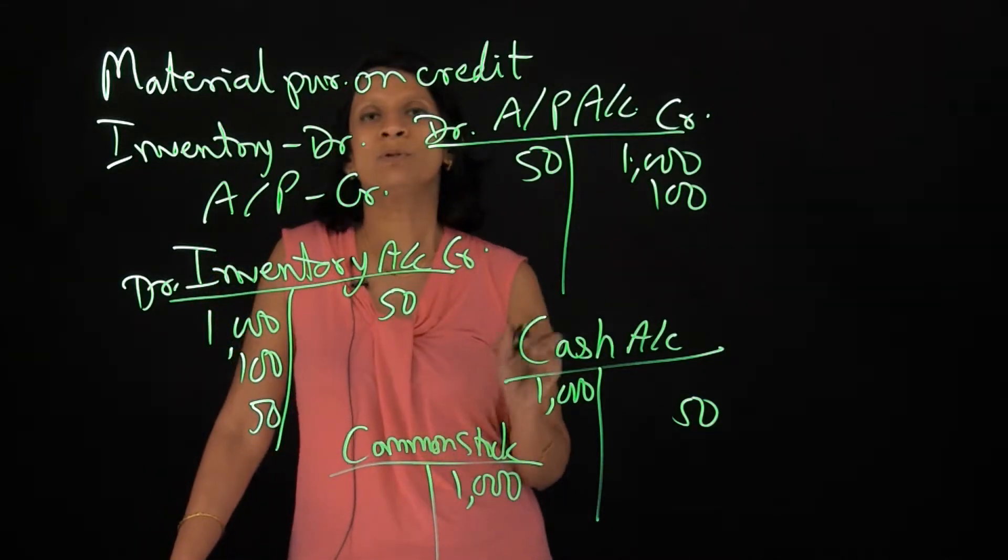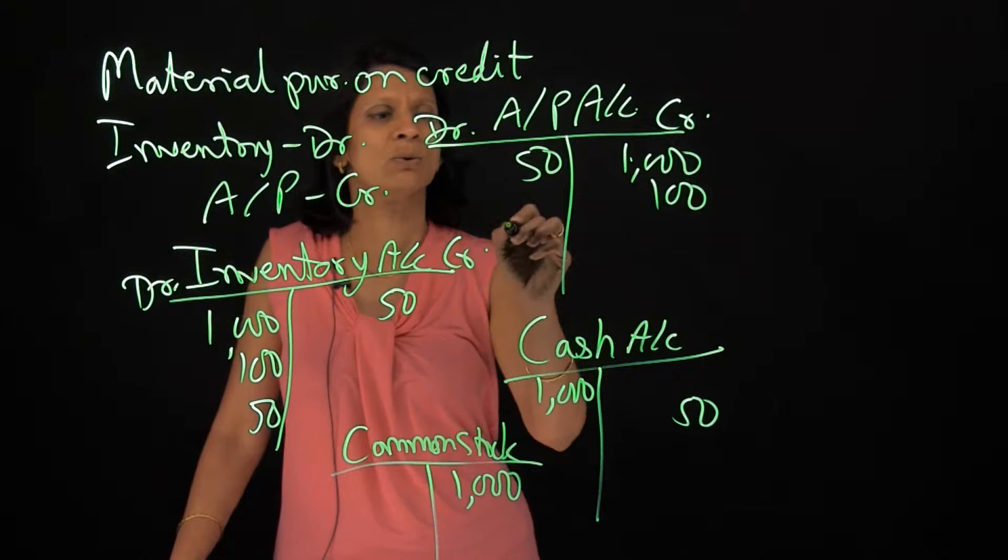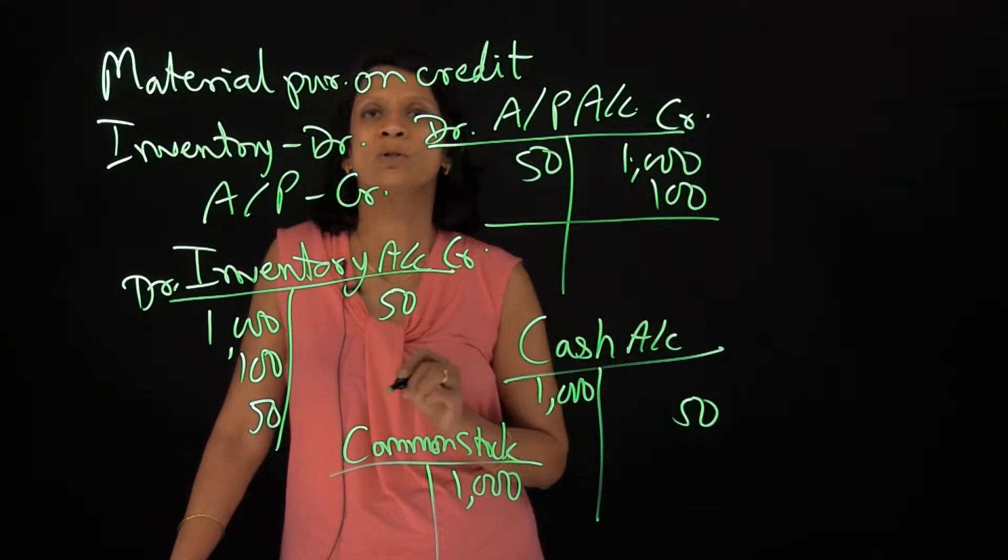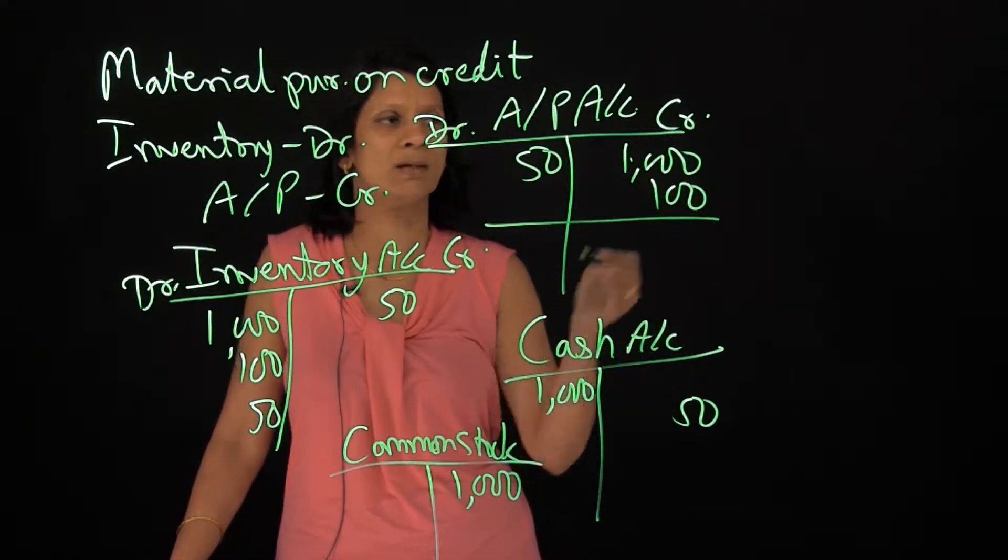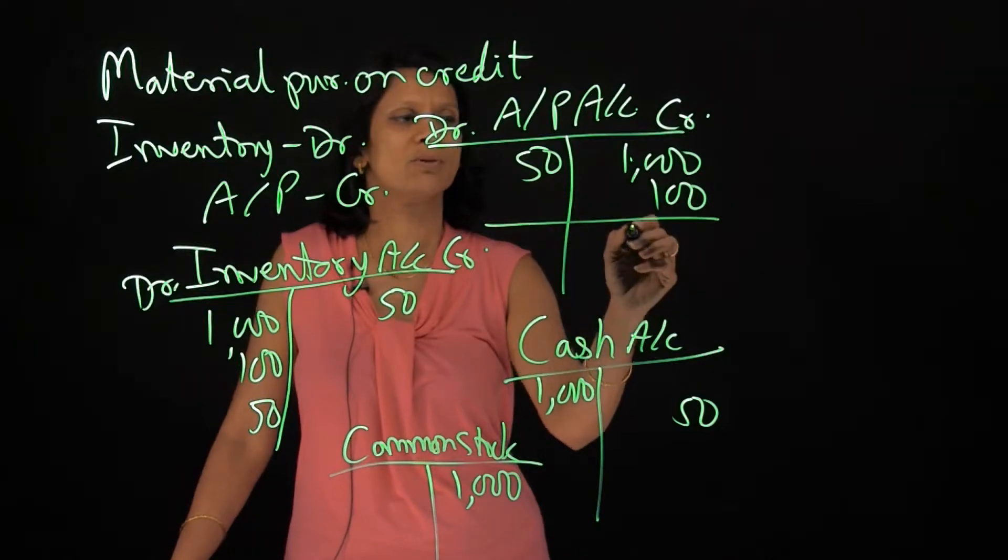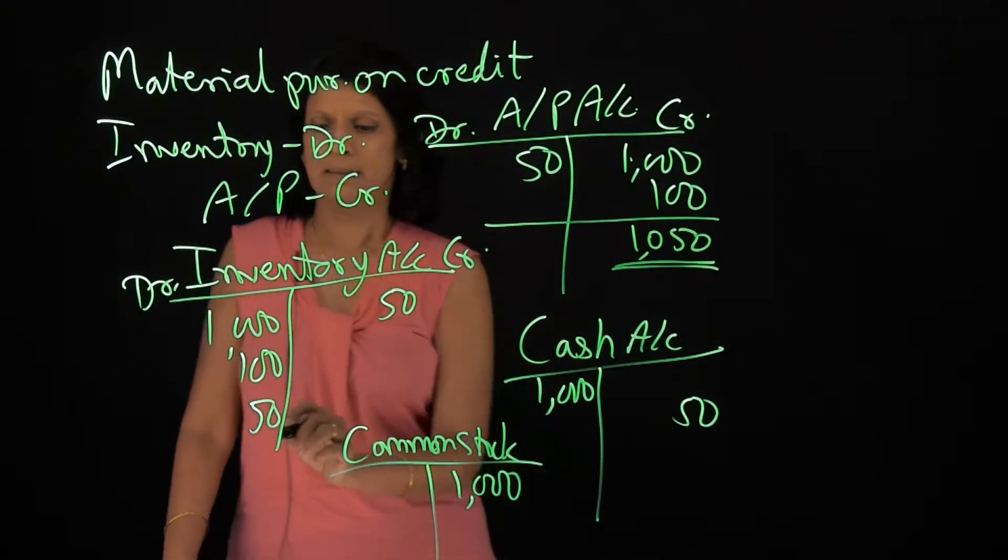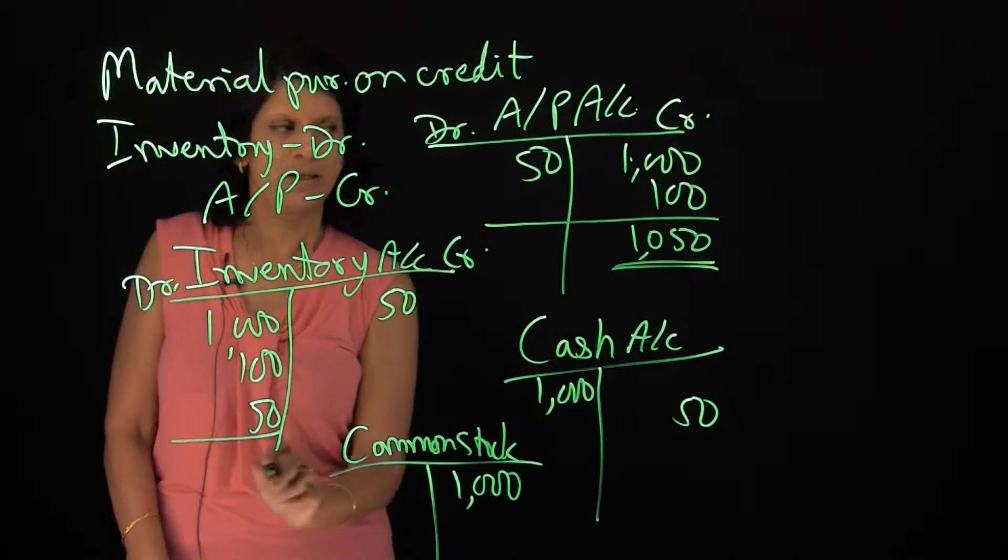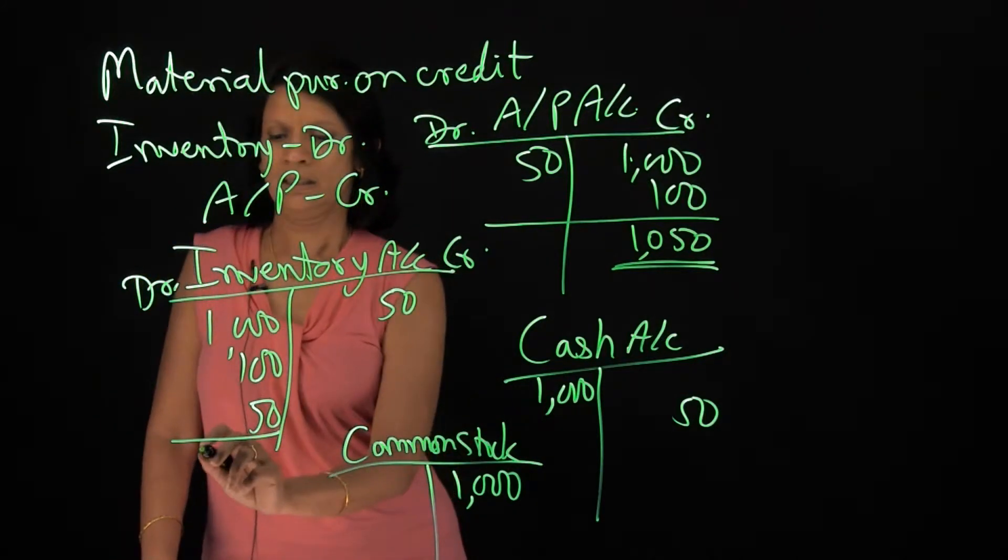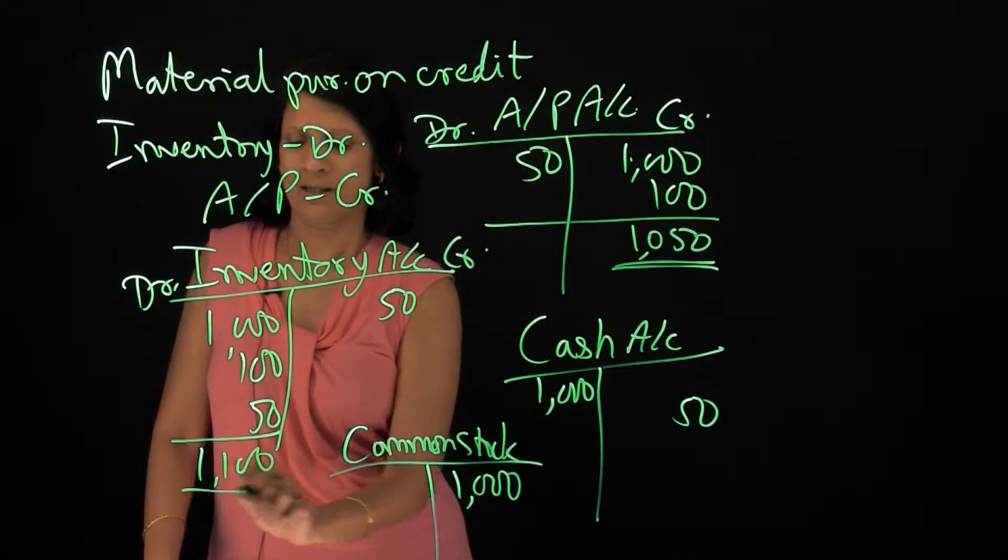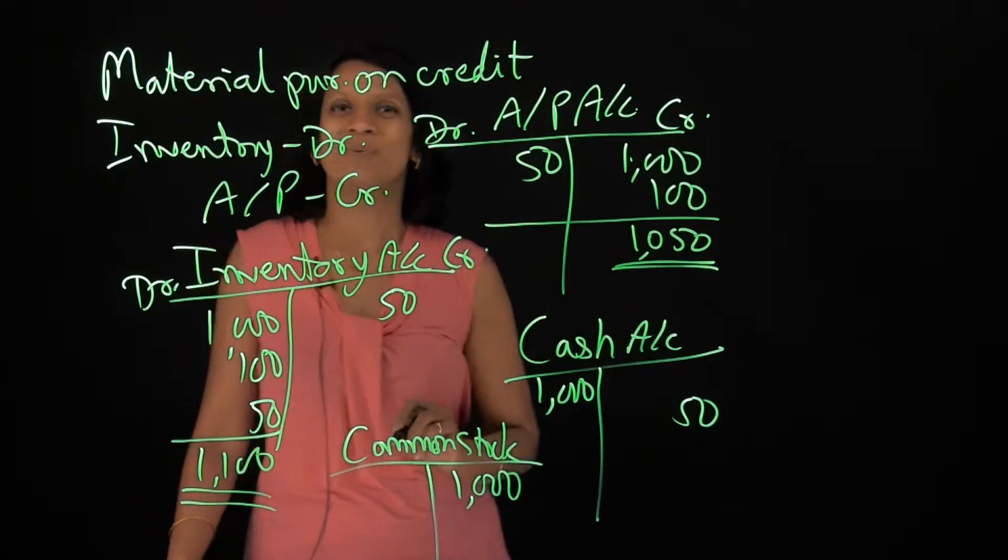Right? So at any particular time, what do I do? I just close my T account and see how much do I owe this particular supplier. So $1,100 minus $50 is what I owe him or her. Then $1,150 minus $50 is again $1,100 is what I own as inventory.